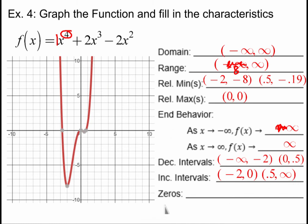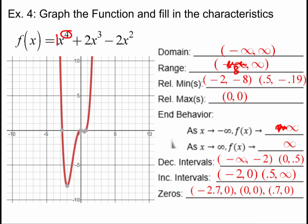For zeros, there are three: at approximately −2.7, 0, and 0.7. Notice that (0, 0) is both a relative maximum and a zero — that's totally possible. So that is all the stuff you need to know about the graphs of polynomial functions.